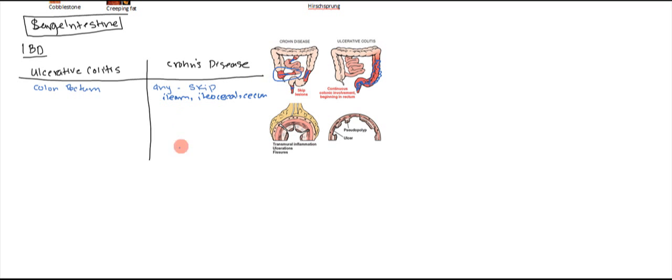The other thing is the type of damage to the colon wall. With ulcerative colitis, you have damage to the mucosa and the submucosa. You can see here it's damaged there and there. This is why you get the broad-based ulcer and these pseudopolyps that form.